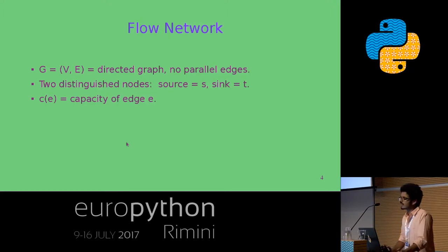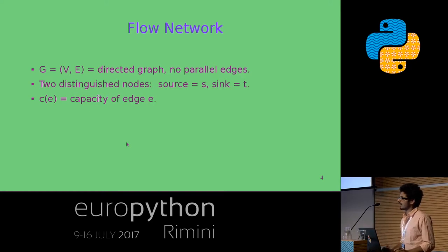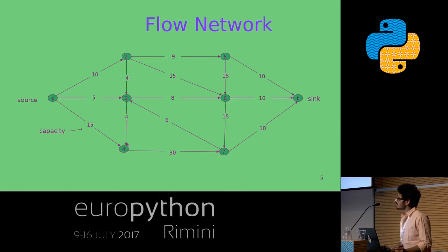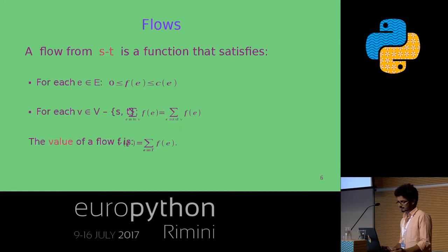What is a flow network? A flow network is a directed graph which generally does not have parallel edges, and we have two very distinct nodes: the source and the sink. The source is where the flow starts and the sink is where the flow ends. For each edge in the flow network, there is a capacity attached to it — the capacity is the maximum amount of material that you can flow through that edge. This is an example of a flow network: S is the source, T is the sink, and the capacities of all edges are given. The capacity of edge S to 4 is 15, meaning you can pass 15 units of material through that edge.